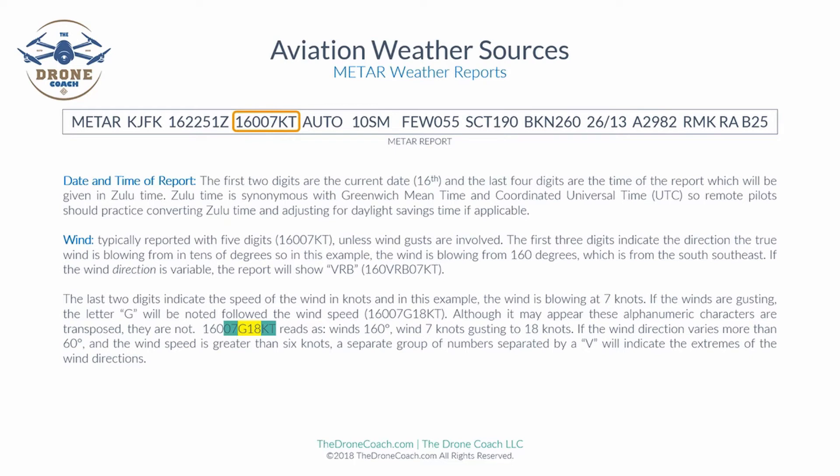If the wind direction varies by more than 60 degrees and the wind speed is greater than six knots, a separate group of numbers separated by a V would indicate the extremes of the wind directions. You may or may not see that on the exam, but this information will be available for you to print out and download at the end of these lessons.